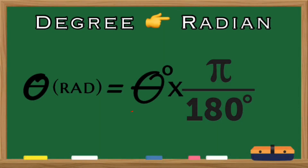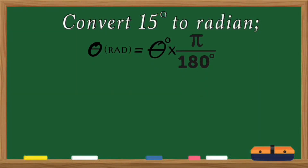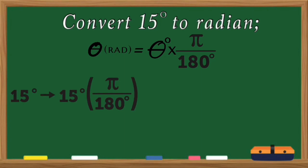You will be needing formulas in order to convert the measures of angles. If the given is expressed in degrees and you are being asked to convert it to radian, the formula is the product of the given angle in degrees and pi over 180 degrees. For example, we are going to convert 15 degrees to radian. In this example, the given is 15 degrees — to convert it into radian, multiply 15 by pi over 180 degrees. Now we need to express 15 and 180 in the simplest form by dividing both with their greatest common factor, or GCF.